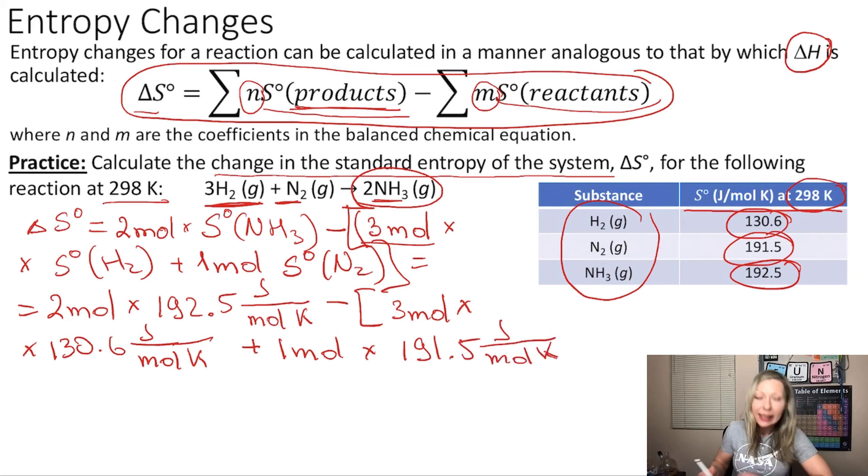Plus 1 mole times 191.5 joule per mole Kelvin, which is the standard entropy for nitrogen gas. So let's add that last bracket right here, there. Let's take a look at the units.